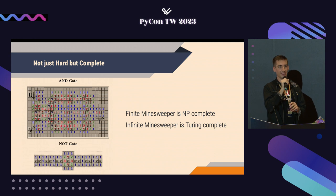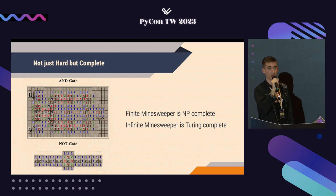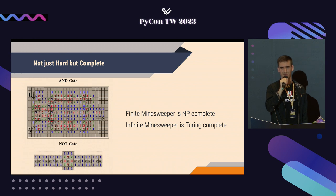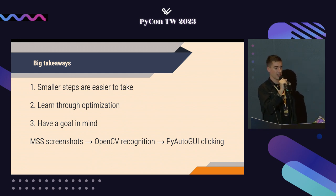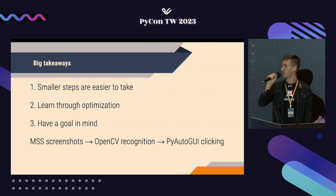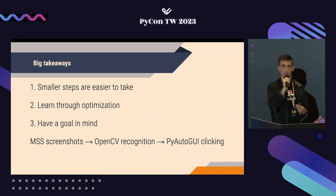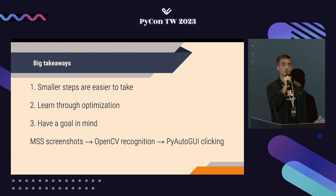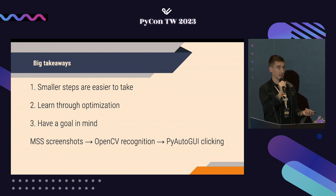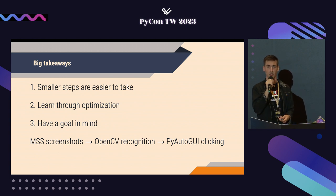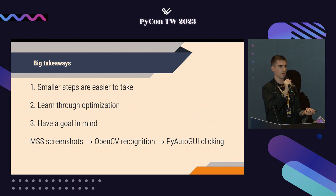NP-hardness is a class of problem, not a 'you can't get this done.' In real life, a halfway decent statistical solver could make progress — it only has to be better than guessing. I just need to figure out a new goal, a new metric, and start again. If you take anything away from this presentation, I hope it's some things I learned about project management: these small steps make it easy to take, learning as you go makes you feel like you're accomplishing something, and having a goal in mind keeps you going through difficult times. On the practical side, MSS for quick screenshots, OpenCV for analysis, and PyAutoGUI can do pretty much anything a human can do on a computer, but using Python.